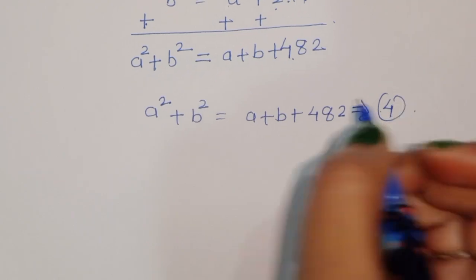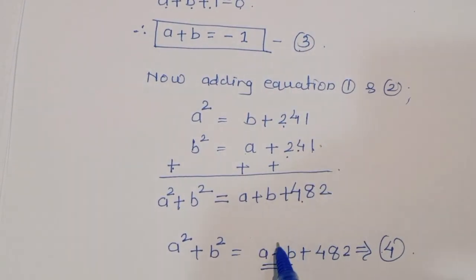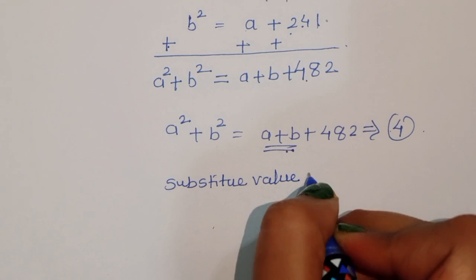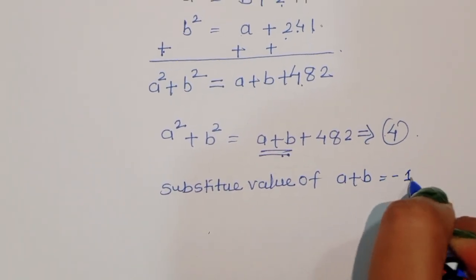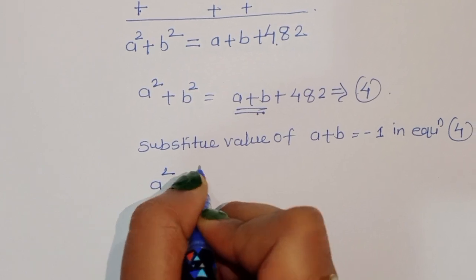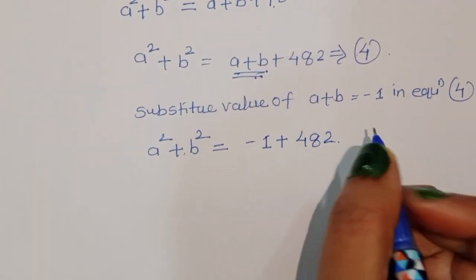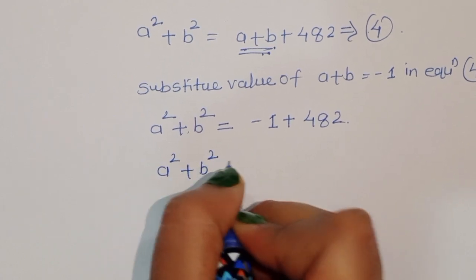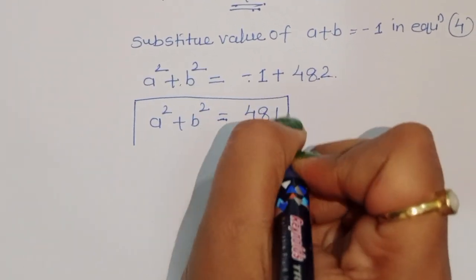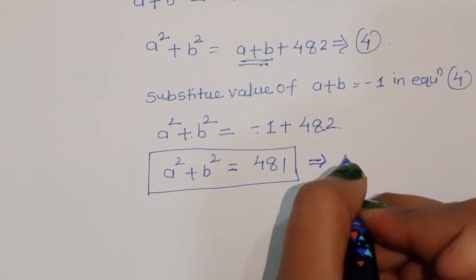We already know from equation 3 that A plus B equals minus 1. Substituting this value into equation 4, we get A squared plus B squared equals minus 1 plus 482, which equals 481. This is equation 5.